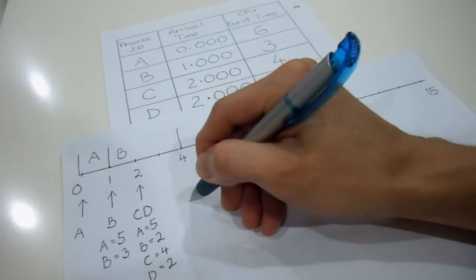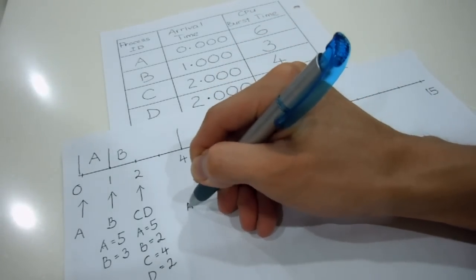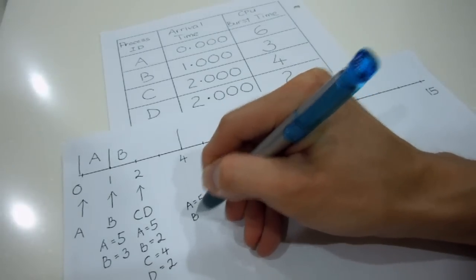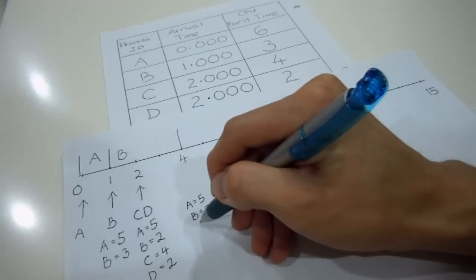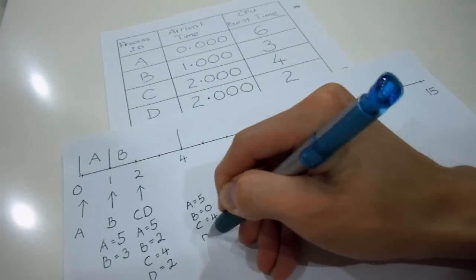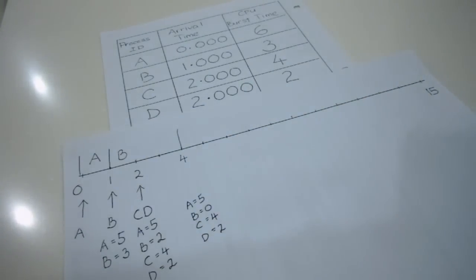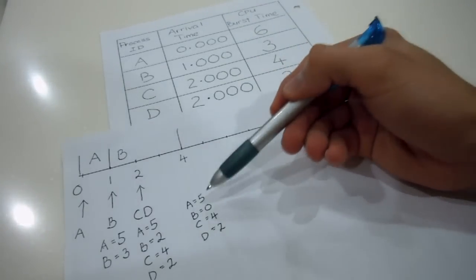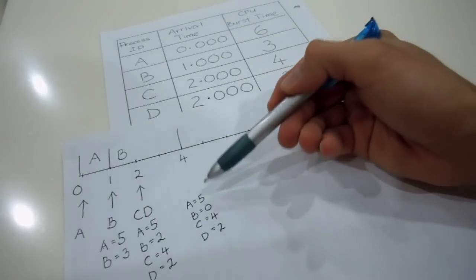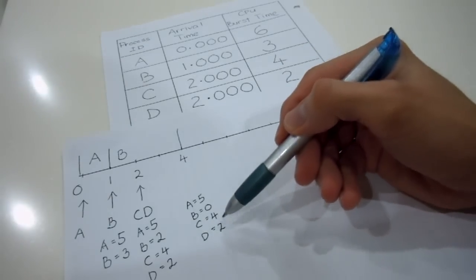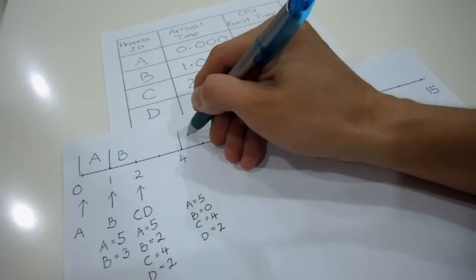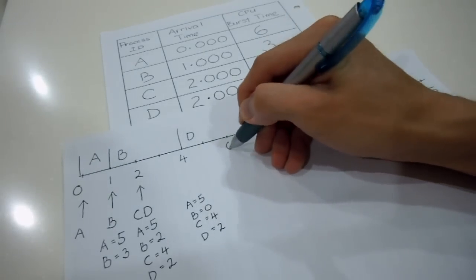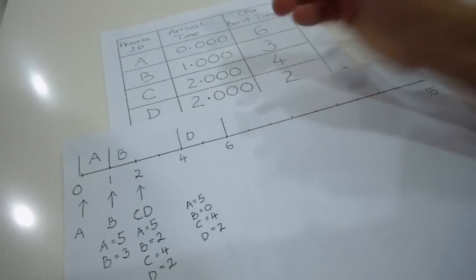So in this case, at time equals 4, my A still left 5, but my B is currently 0. And C is 4 and D equals 2. So for this case, we're going to compare again to get the lowest burst time. And at this time, D is going to be having a lower burst time. So D is going to come in next, which is having 2, so we'll be ended up at 6.